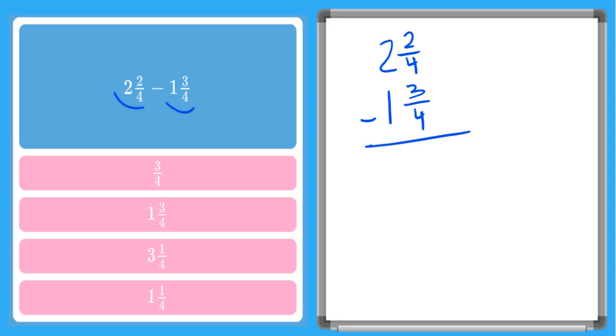But instead of borrowing, I can convert both of these to improper fractions. I'm first going to do the top one: 2 times 4 is 8, plus my numerator, which is 2, all over the same denominator, that gives me 10 over 4. And this one, I'm going to do the same thing: 1 times 4 is 4, plus my numerator 3, all over my same denominator 4, is going to give me 7 over 4.